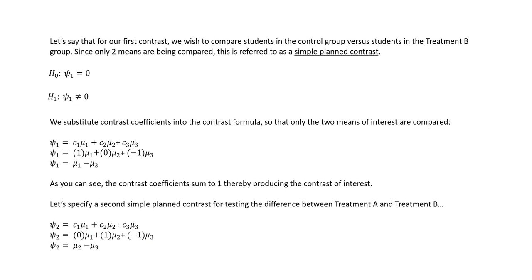In my PowerPoint, I use three planned contrasts throughout much of the demonstration. For the first contrast, we're comparing the mean for the control group against the mean for the treatment B group, using contrast codes of one for group one, zero for group two, and negative one for group three. The second contrast compares treatment A versus treatment B, using contrast codes of zero, one, and negative one for the control, treatment A, and treatment B groups respectively.